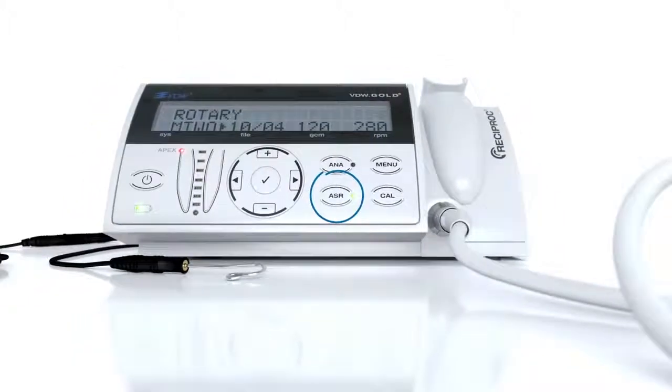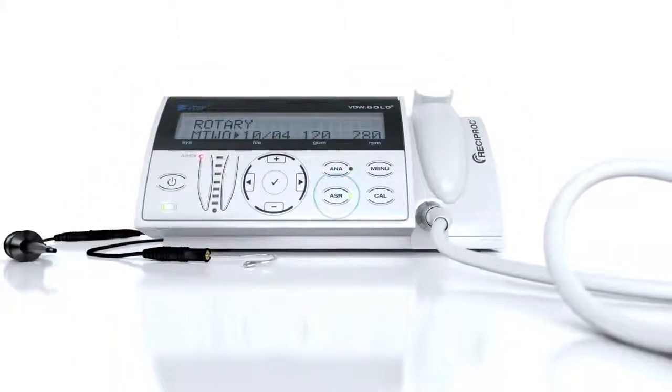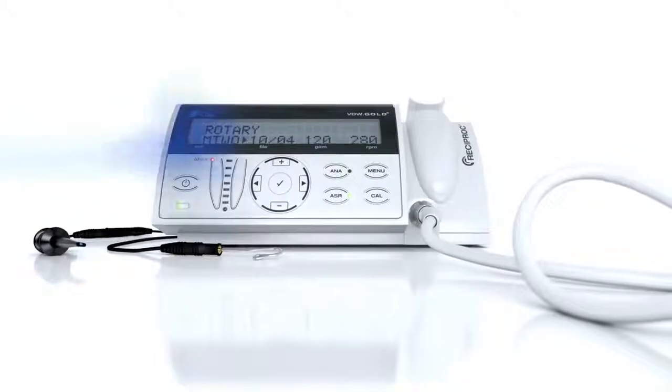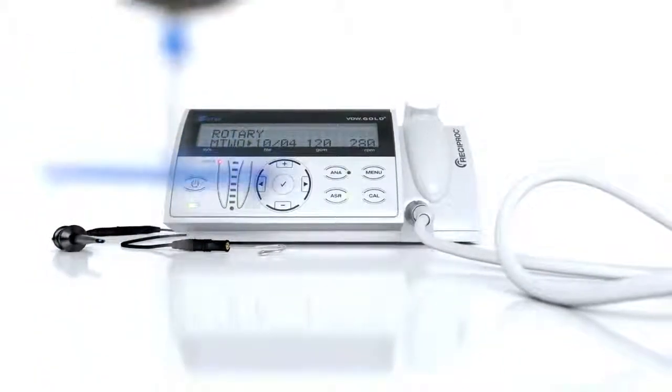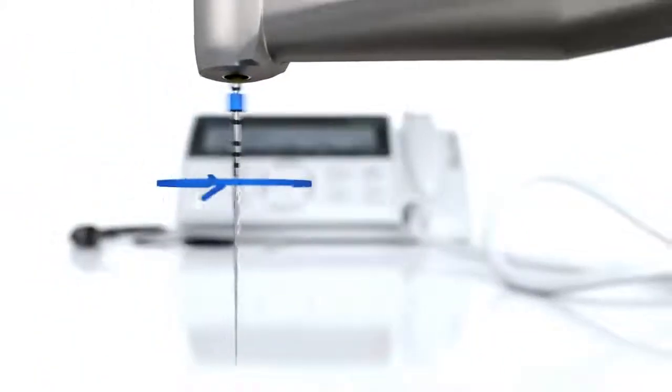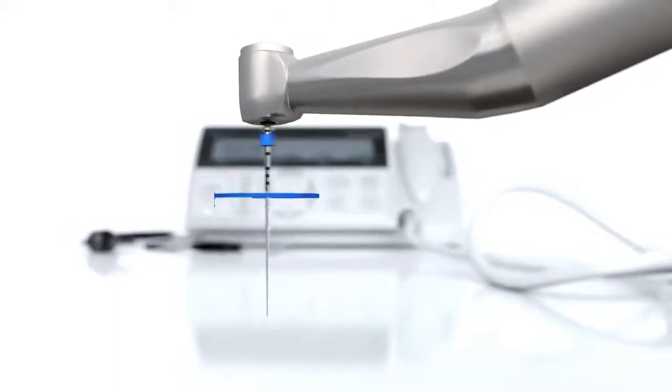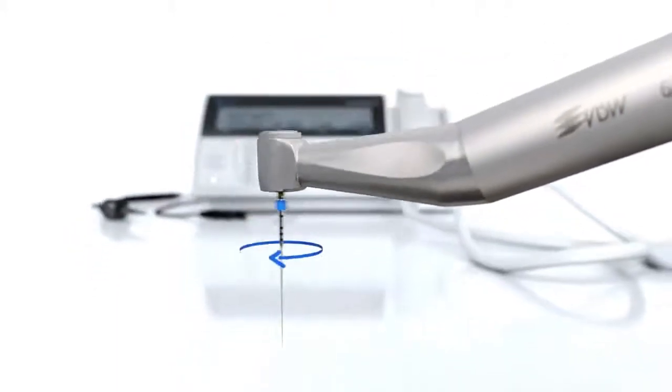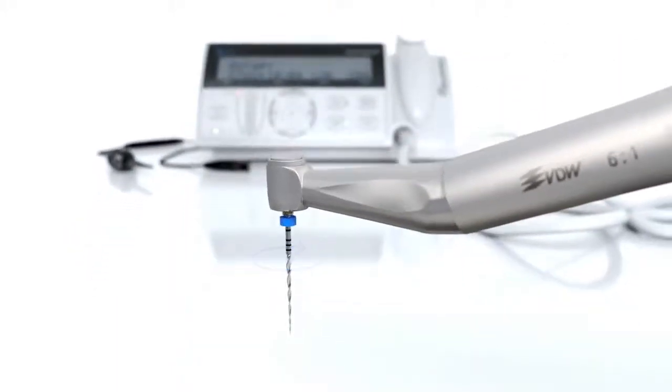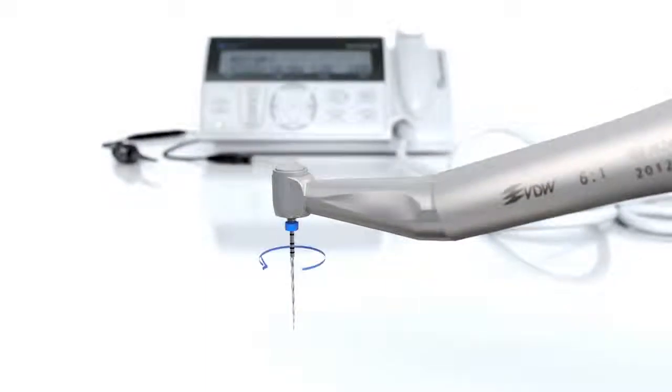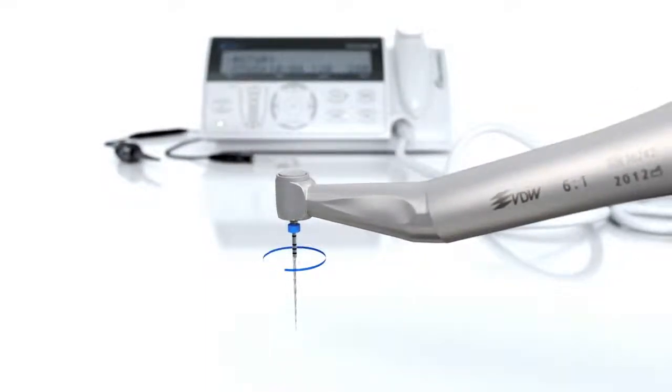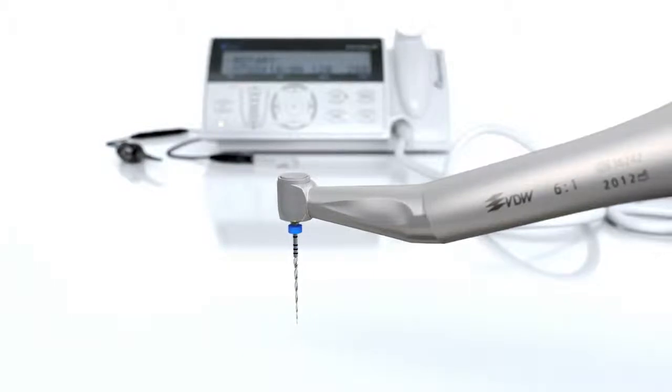Pressing the ASR key controls the auto stop reverse function. When the ASR key lights green, the torque level for each file size is monitored. When the preset torque limit is reached, the motor stops automatically and reverses into counterclockwise direction until the file has freed itself. Then the motor will revert back to clockwise rotation.